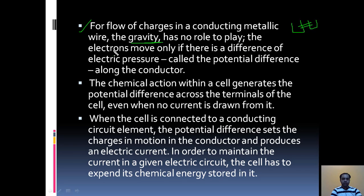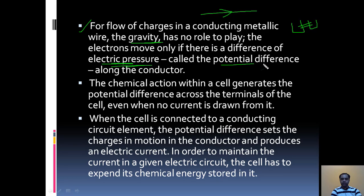The electrons move only if there is a difference of electric pressure. Suppose this is a conducting wire; from one point to another point, the electron will move only if there is a potential difference, if there is an energy difference — that is, due to electric pressure, the electrons move. This electric pressure is called potential difference along the conductor. Whenever there is an energy difference, electrons flow.